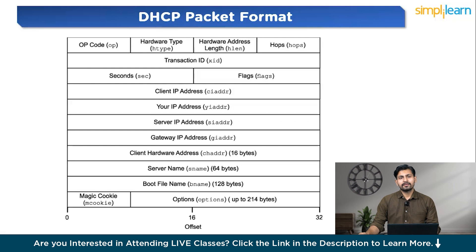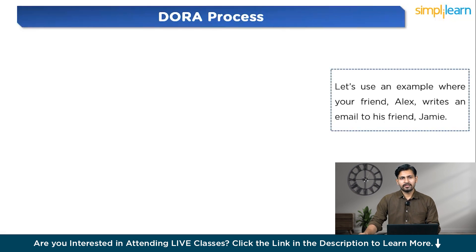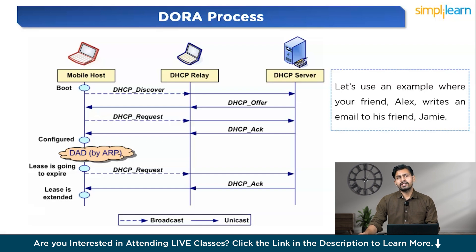The server may include a special identifier called a magic cookie with the value 99.130.83.99, signaling the presence of additional options for the client to process. The overall DHCP working process is called the DORA process. As seen in the diagram, a mobile host client, a DHCP relay, and a DHCP server interact during IP address assignment. The first step is DHCP Discover — the mobile host broadcasts a DHCP Discover message to find available DHCP servers. The message travels from the mobile host to the DHCP relay, which forwards it to the DHCP server. The broadcast ensures it reaches all potential servers.